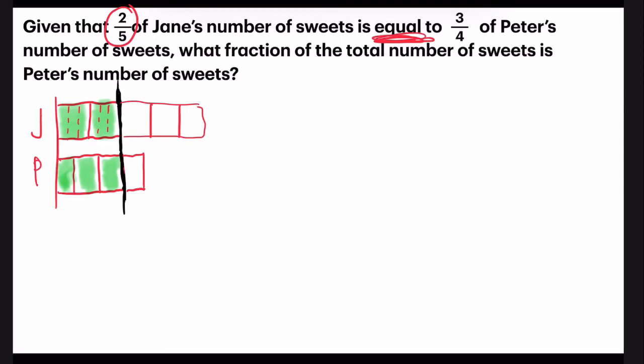And for Peter, to be able to have six parts, I need to cut each unit into two. Now you compare. I have six on the top and six at the bottom.